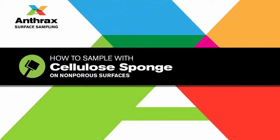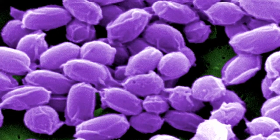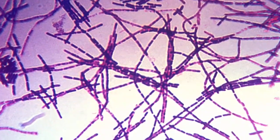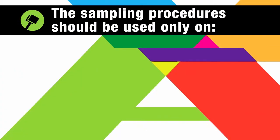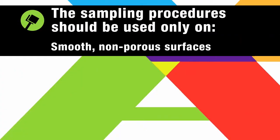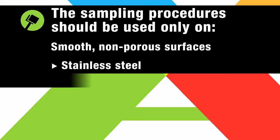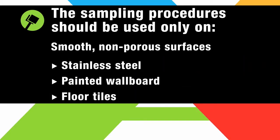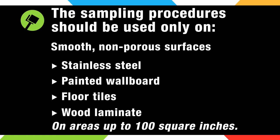This video will demonstrate how to use a cellulose sponge to sample for bacillus anthracis or anthrax. The sampling procedures demonstrated in this video should be used only on smooth, non-porous surfaces such as stainless steel, painted wallboard, floor tile, or wood laminate on areas up to 100 square inches.